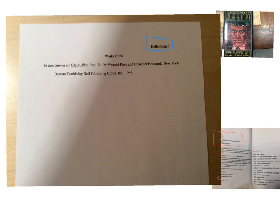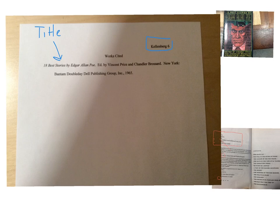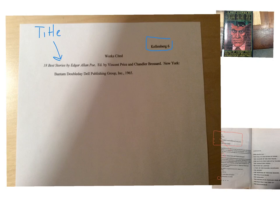You can put 'Works Cited' or 'Work Cited' — if you only have one work, that's fine. But if you're going to use this as a template for future works cited pages, you can put 'Works Cited.' The first thing we're going to put is the title in italics: '18 Best Stories by Edgar Allan Poe.' Then I'm going to put the editors — I don't have to write 'editors,' I can just put 'ed.' followed by Vincent Price and Chandler Brossard. Then I'm going to put where it's published with a colon. If you go on to a second or third line, it's going to be indented. So I've indented and put who published it — Bantam Doubleday Dell Publishing Group, Incorporated — then a comma, and then the year, which is 1965.